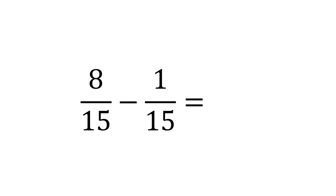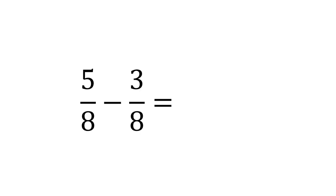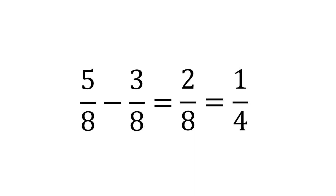Let's try eight fifteenths minus one fifteenth. Denominators are the same, so that stays as 15. Eight minus one is seven, so we get seven fifteenths. Here's another example: five eighths minus three eighths. Denominators are the same, so we do five take away three — that's two over eight. Both numbers are even, so we can divide top and bottom by two and get an answer of one quarter.